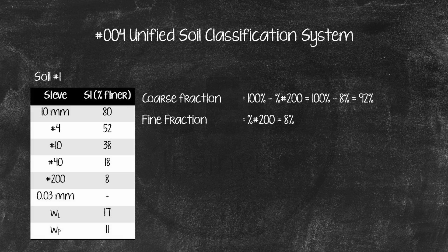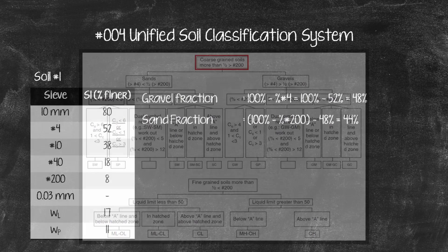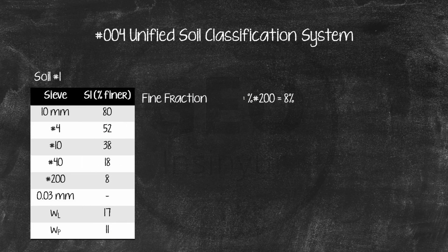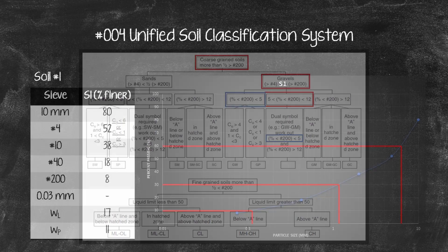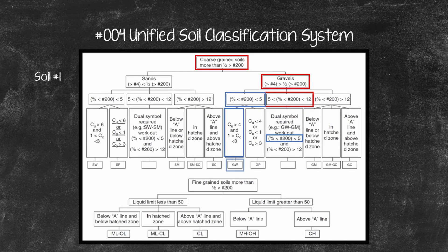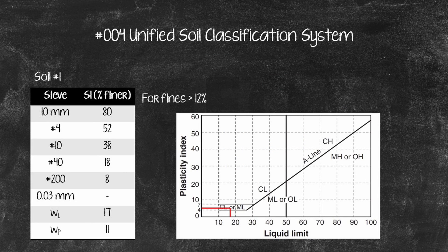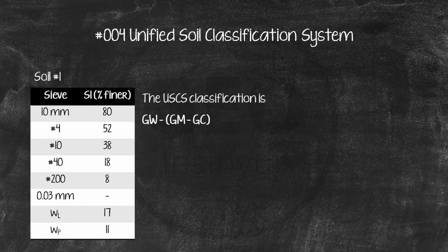Soil No. 1: The coarse fraction is larger at 92%, so it is a coarse-grained soil. The gravel fraction at 48% is larger than the sand fraction, so the soil is in the gravel category. The fine fraction is 8%, which is between 5% and 12%, so a dual symbol is required. For fines less than 5%, the particle size chart gives D10 = 0.105, D30 = 1.05, and D60 = 6.1, yielding Cu = 58.1 and Cc = 1.7 — classified as GW. For fines more than 12%, the plasticity chart with liquid limit = 17 and plasticity index = 6 plots in the hatched zone, giving GM or GC. Therefore, Soil No. 1 is classified as GW-GM/GC.